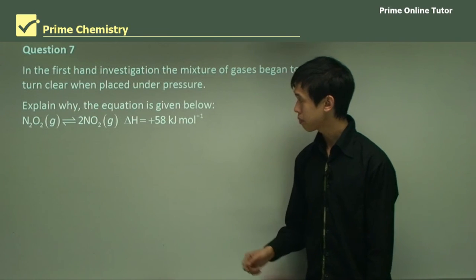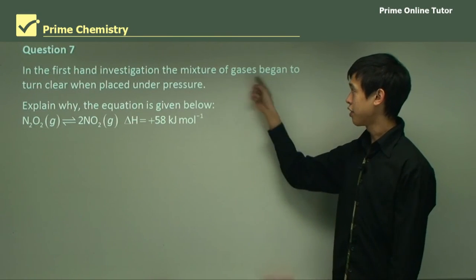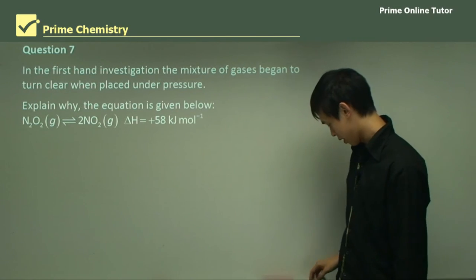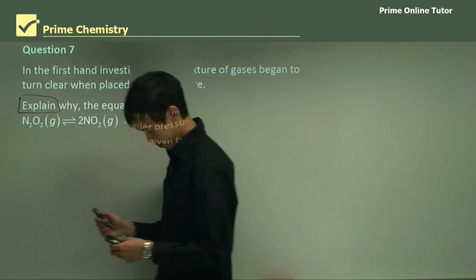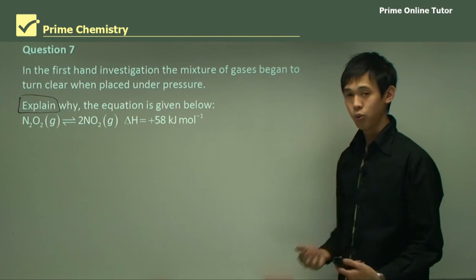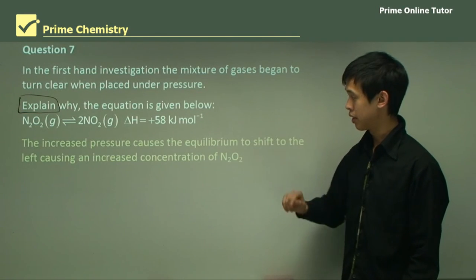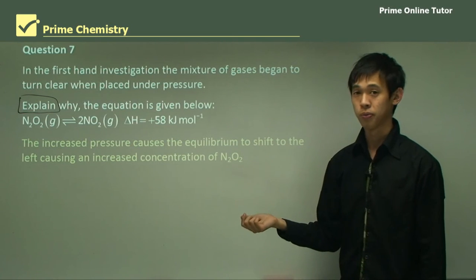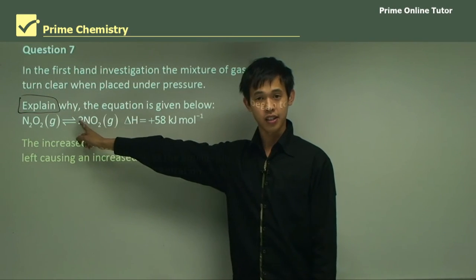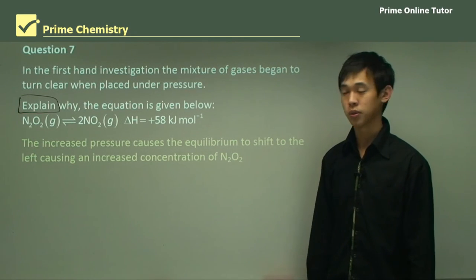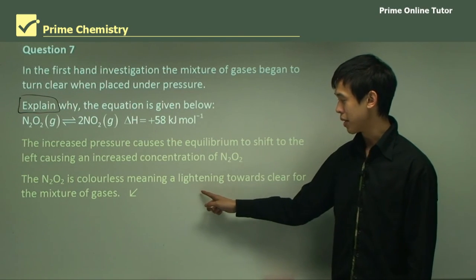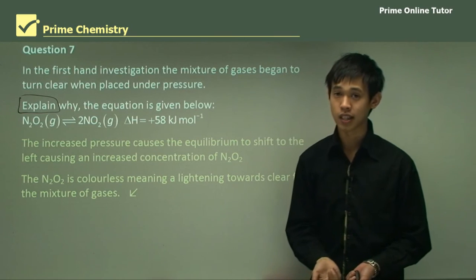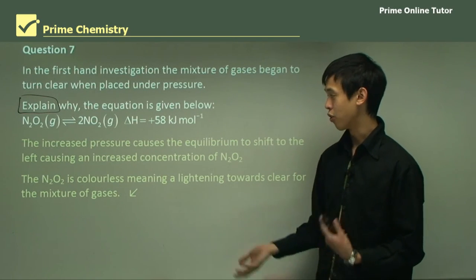Moving on to question 7. In the first-hand investigation that we talked about, the mixture of gases began to turn clear when placed under pressure. Explain why. And the equation is given below here. So explain, remember, is to do with cause and effect. The increased pressure causes the equilibrium to shift to the left, causing an increased concentration of N2O4. Now the reason why is because there's less moles of gas on the left-hand side. And when we put it under pressure, we're looking for the lowest number of moles. Now the N2O4 is colourless, meaning a lightening towards clear for the mixture of gases. So if the concentration of this increases, there must be less of this. So the murkiness must disappear. And so you'll see it getting clearer. So it's just an application of Le Chatelier's principle.